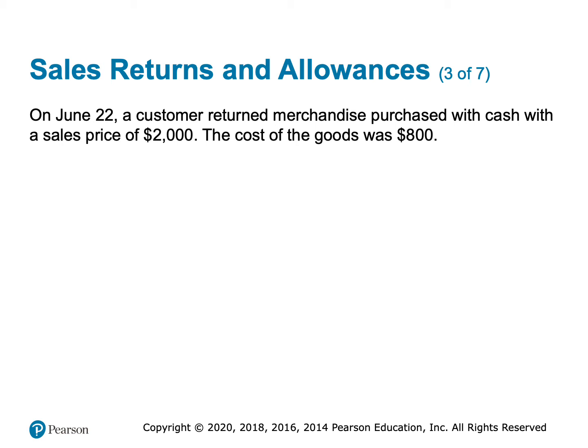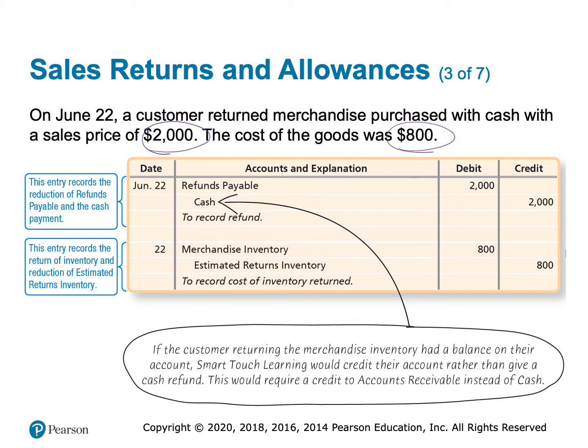On June 22nd, a customer returned merchandise to us. They had paid with cash, so we give them cash back. The inventory had a sales price of $2,000 and an original cost of $800. Just as we do two entries when we sell, we do two entries when goods are returned. The first entry gives the customer their money back: since we're giving cash away, we credit cash and debit that refunds payable liability account, reducing the liability.